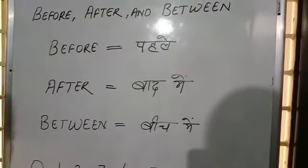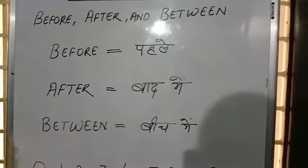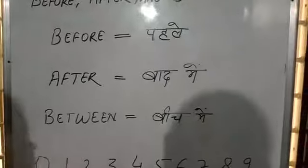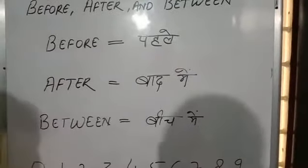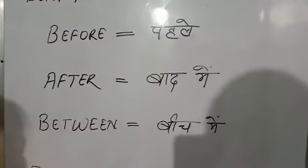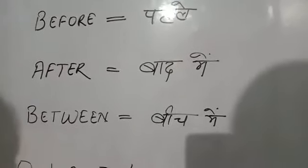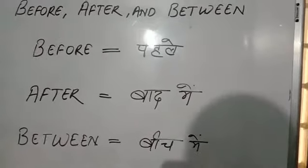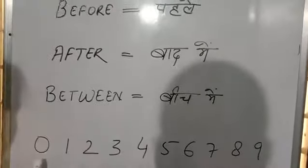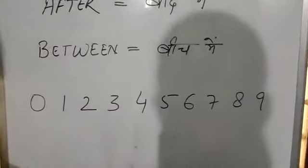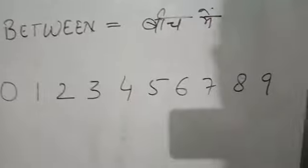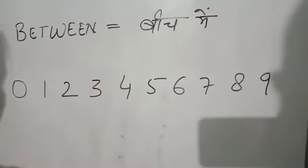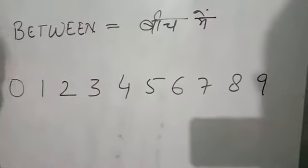I hope you have known all these. Before, after and between. So, let's revise the topic once again. Here I have written some numbers from 0 to 9. Now, tell me which number will come before 9?